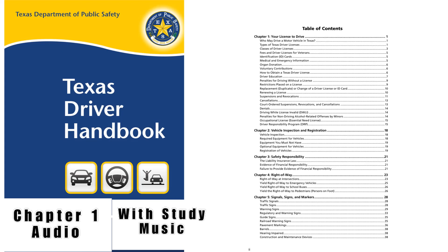Table 3 – Class B Driver License: Minimum age 18 or older; applicants 18 to 24 are required to successfully complete an approved driver education course. Fee: $24 for license plus $1 fee equals $25. Expiration: 6 years. Minimum age 17 with completion of an approved driver education course. Fee: $15 for license plus $1 fee equals $16. Expiration: on applicant's next birthday.